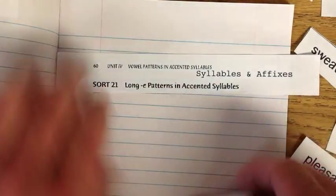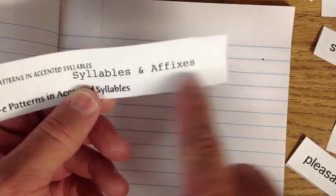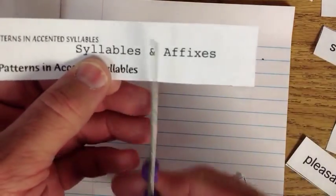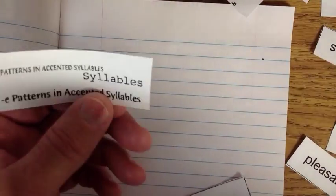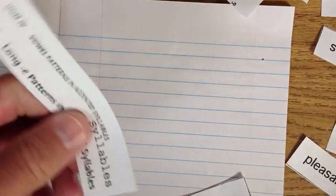Alright. So, here we go. Let's do this thing first. Now, I have that syllables and affixes up there. But you know what? I'm not too worried about that. I want the sort and the title right there.